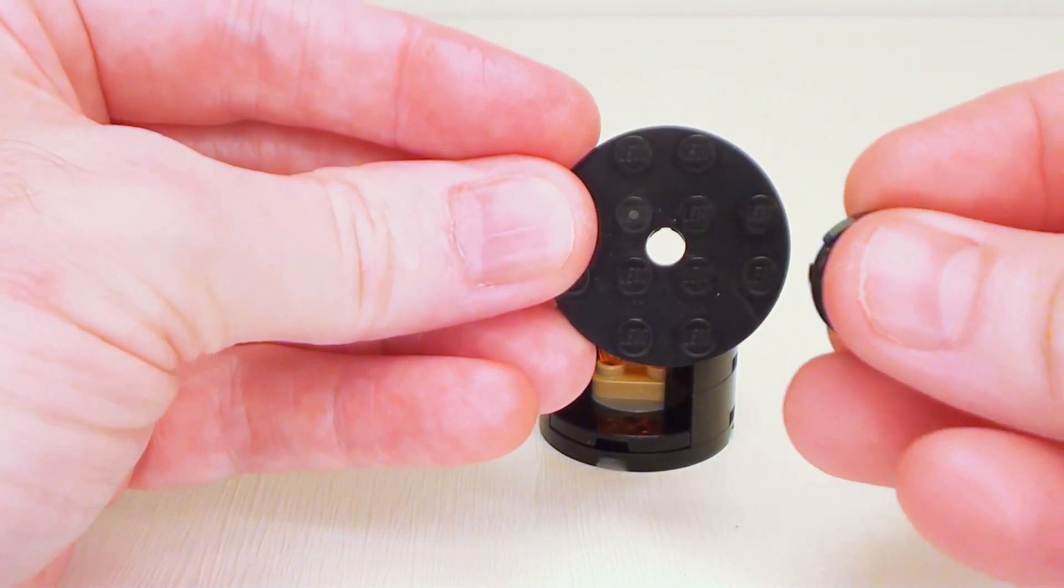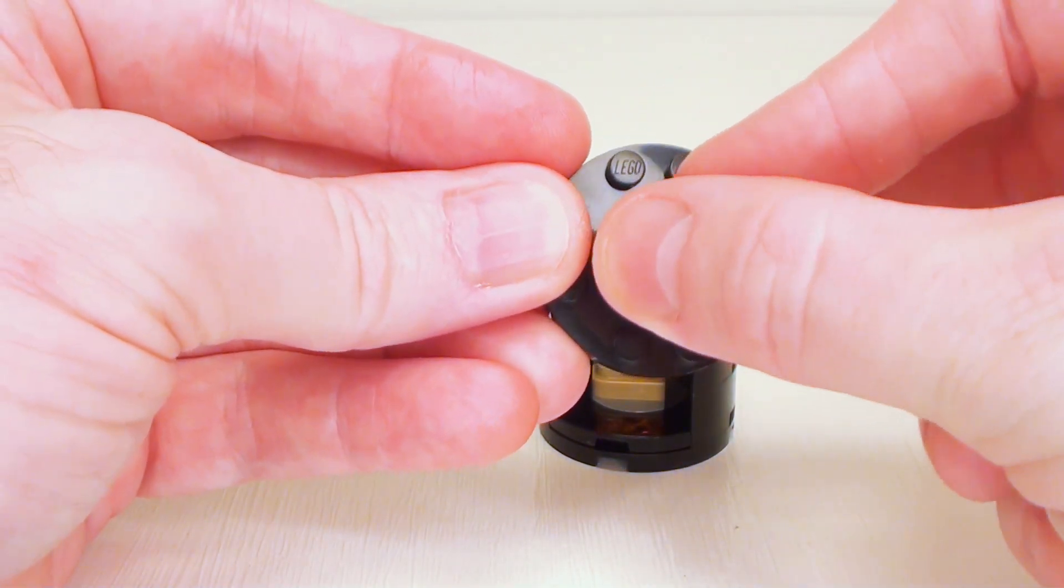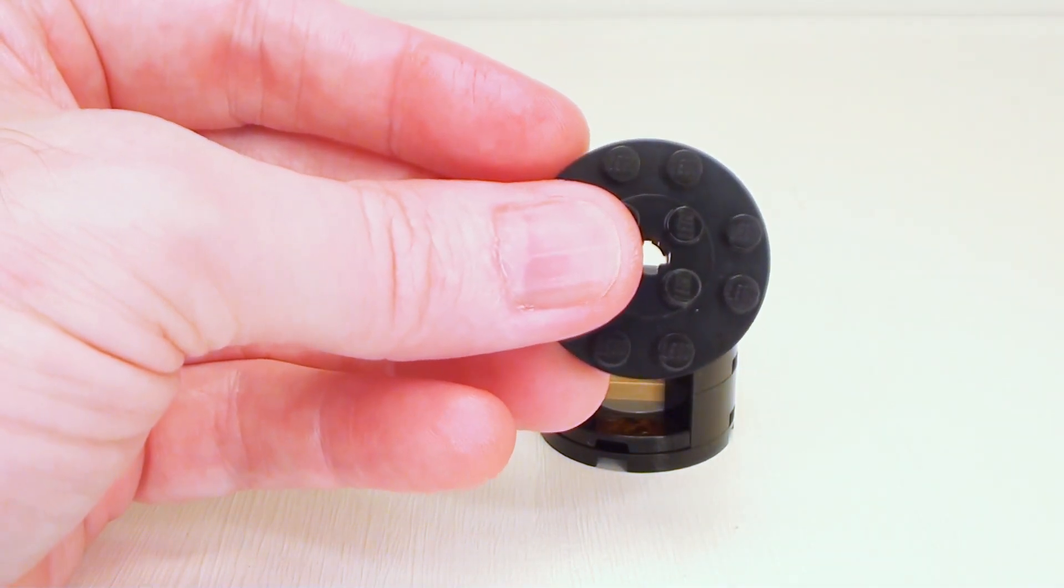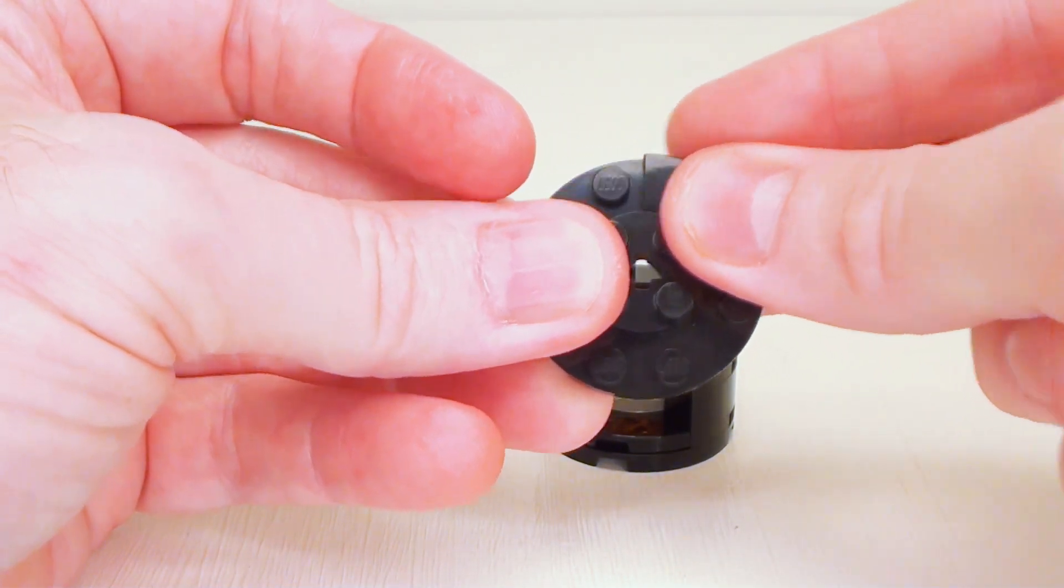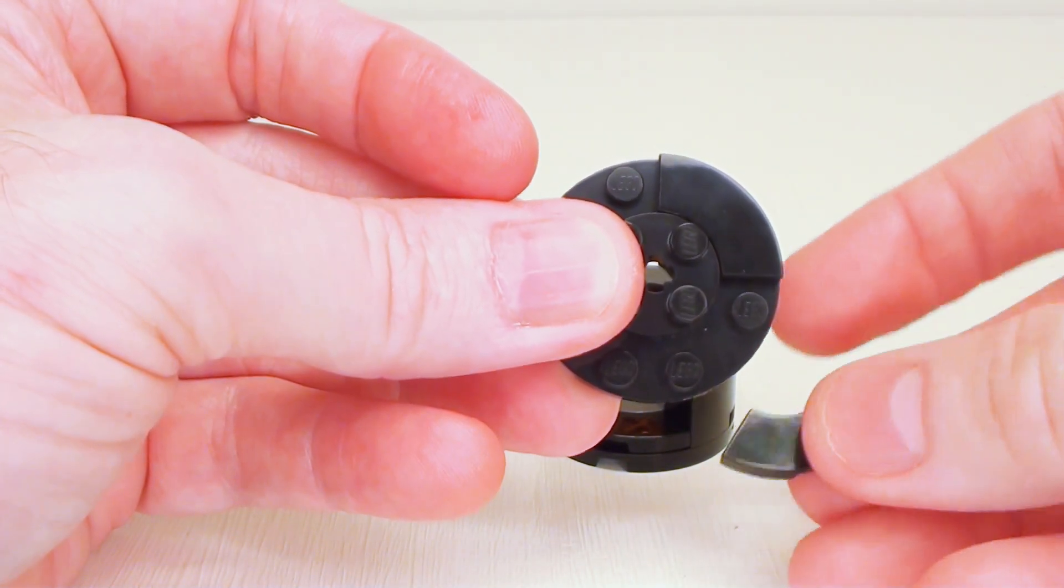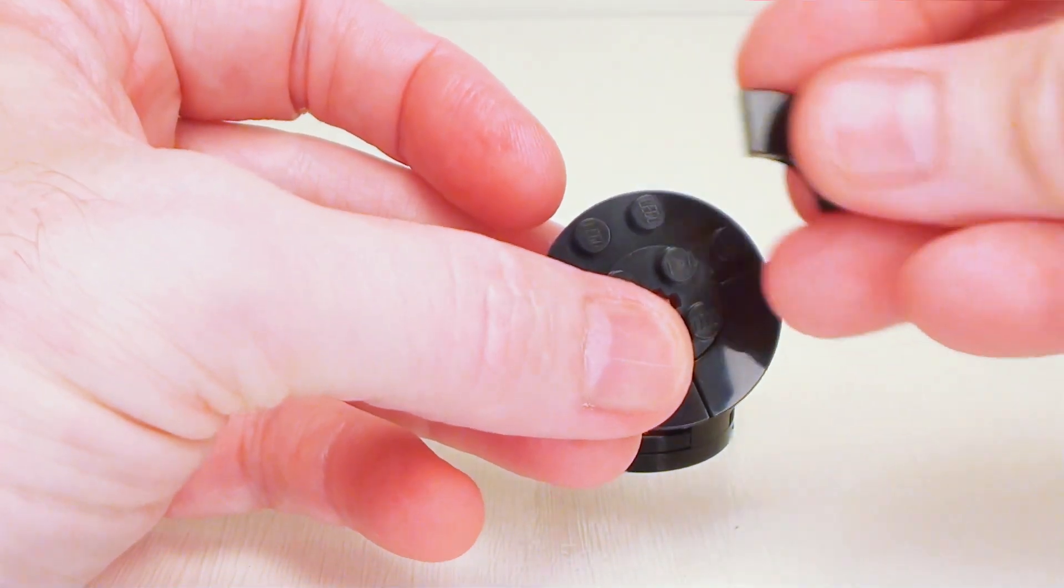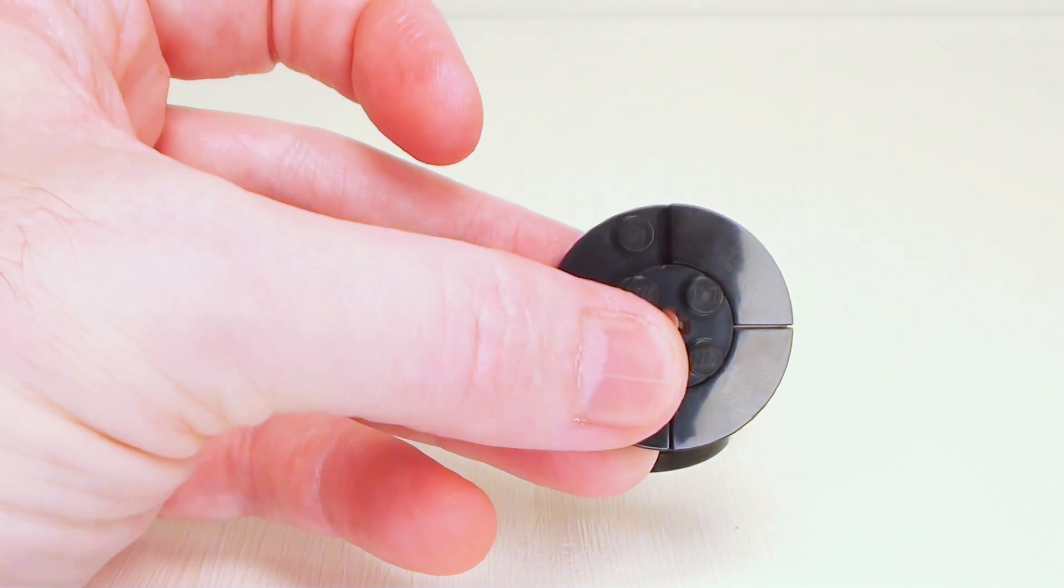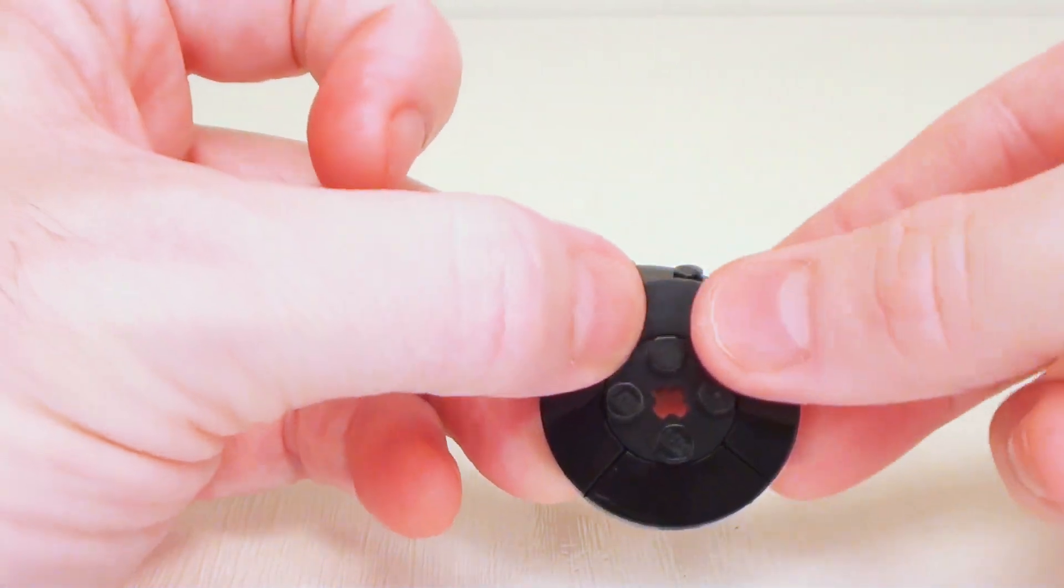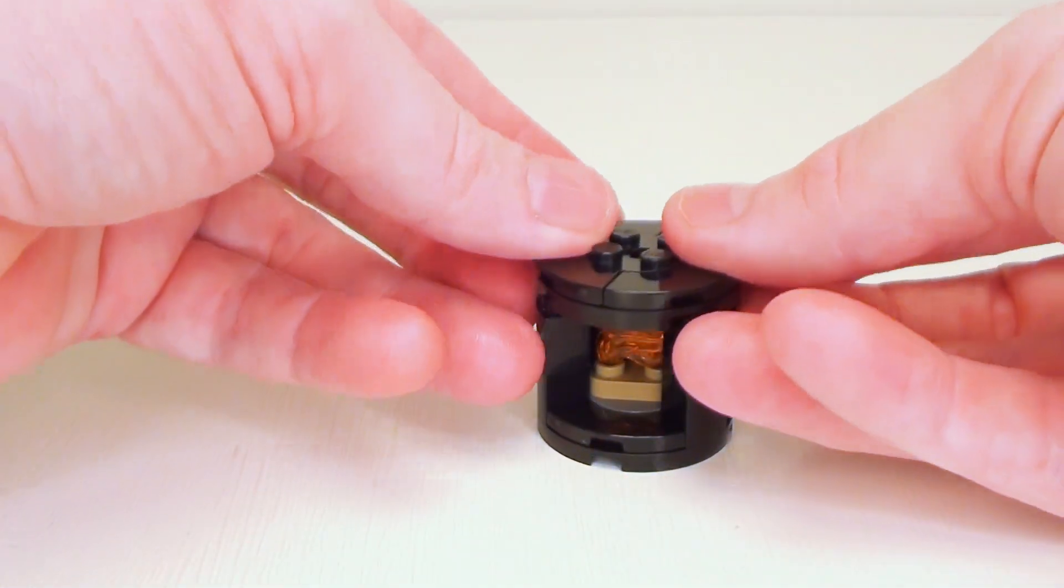Take another 4 by 4 round plate. I'm going to place a 2 by 2 round plate right in the center. And then I'm going to surround that plate with four 2 by 2 flat tiles with bow. This will finish off the top of the wood-burning stove. I'm going to place this right on top.